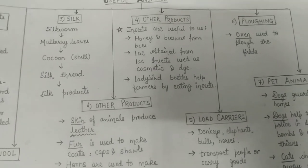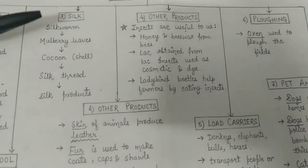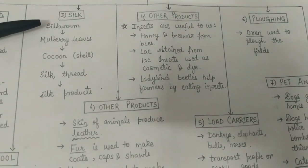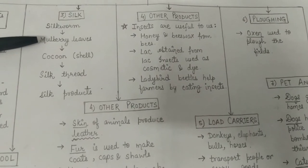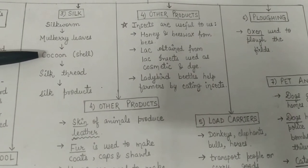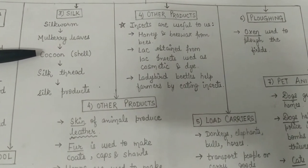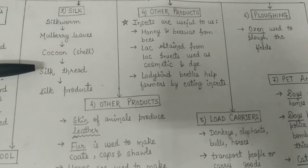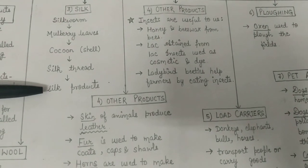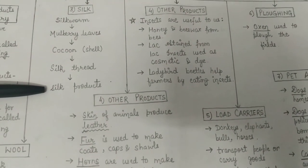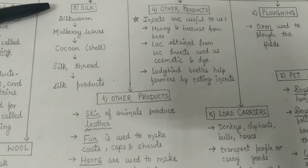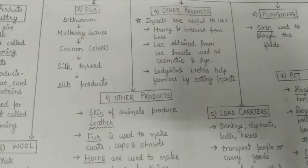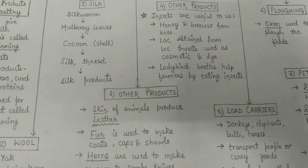So, this is basically the process of how we obtain silk products from the silkworm: first, the silkworm feeds on mulberry leaves; then it forms a shell-like structure around itself known as a cocoon; from the cocoon, silk thread is prepared; and from the silk thread we make silk products. In this way, the silkworm helps in obtaining silk.